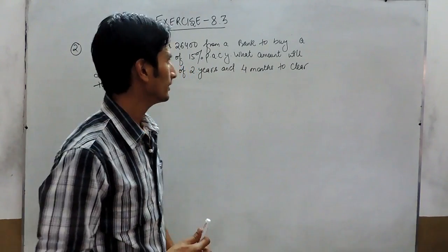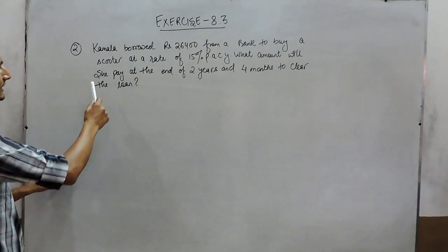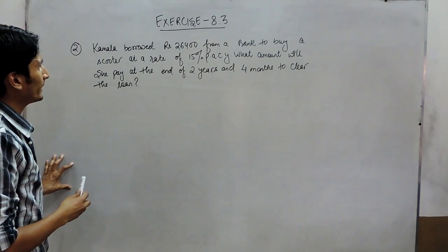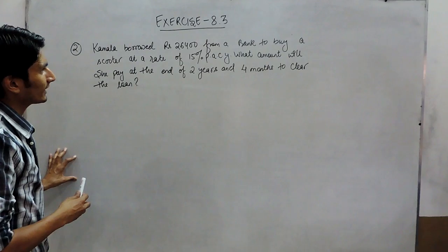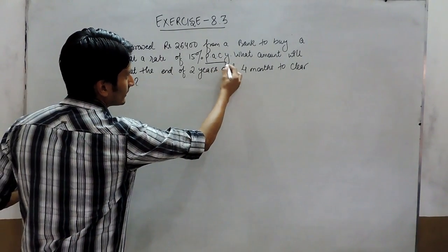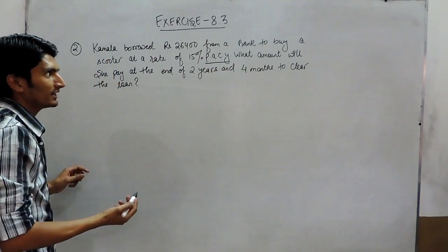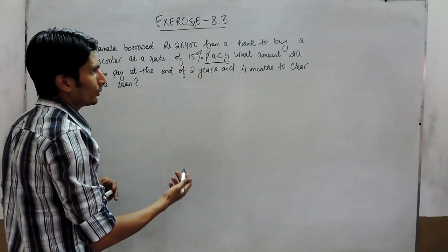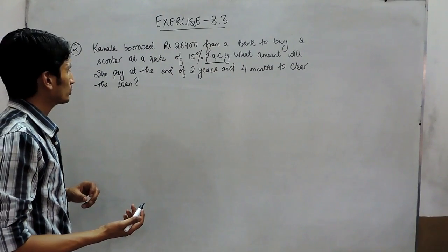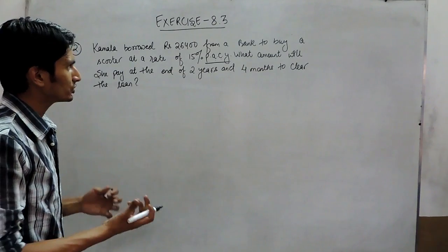Hello everyone, in this part we are going to solve question number 2. In this question, Kamala borrowed Rs. 26,400 from a bank to buy a scooter at a rate of 15% per annum compounded yearly. This means the interest will be paid after each year. What amount will she pay at the end of 2 years and 4 months to clear the loan? We need to find the final amount she has to pay.